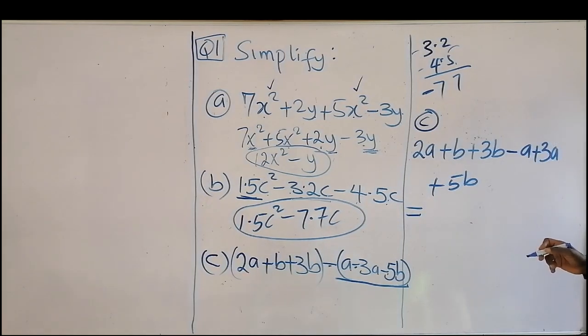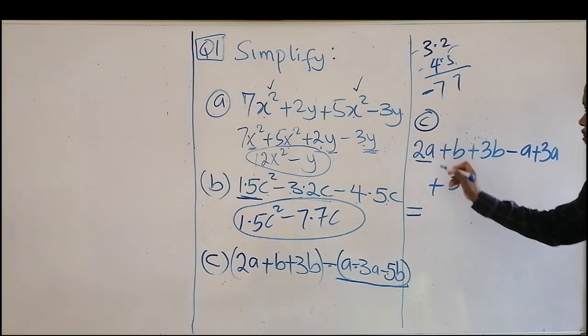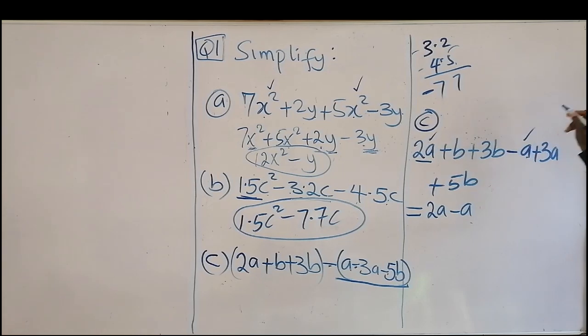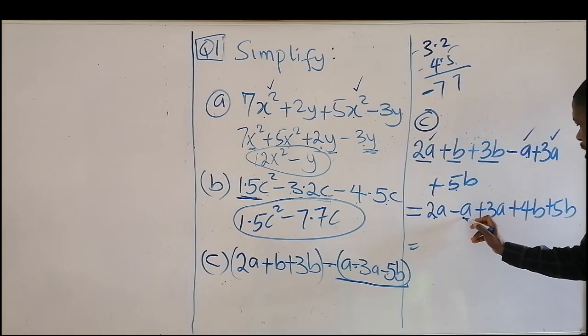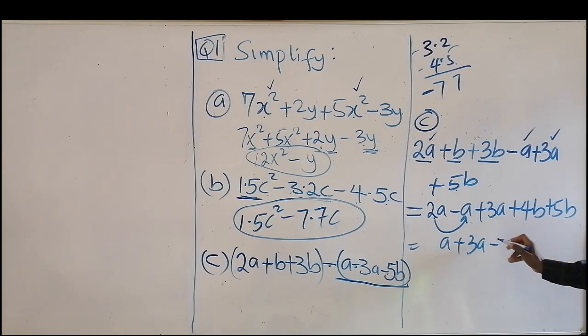The next thing we do is bring all the a together: 2a minus a, plus 3a, then followed by plus 3b, that's plus 4b, then plus 5b. That will be 2a minus a, that's a, plus 3a, and 4b plus 5b, that's 9b.